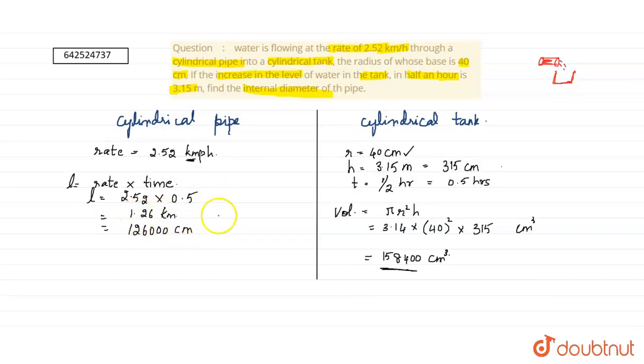Now we have the length of the cylindrical pipe. We know that volume of water in the pipe equals volume of water in the tank, so we can equate this to 158,400.